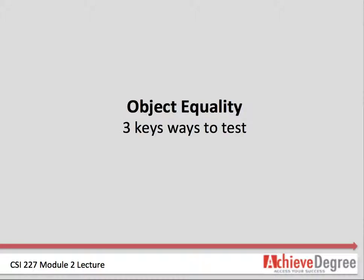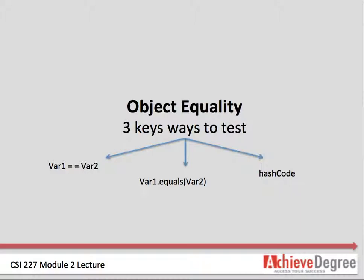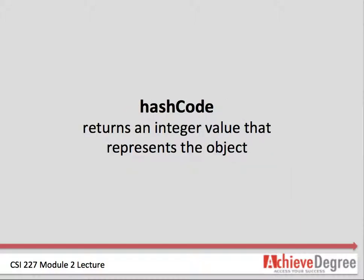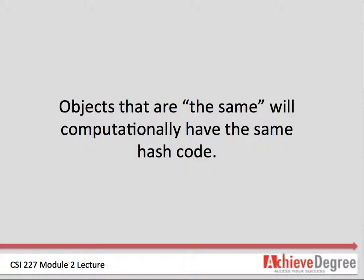There are three key ways to test for equality. The first two are expected, but hash code needs a closer look. When dealing with objects that may have many structures inside of them, hash code allows for all the elements to be evaluated. The hash code method returns an integer value that represents the object. Within the superclass object, a hash code is calculated and each object has a distinct hash code. Objects that are the same will computationally have the same hash code.